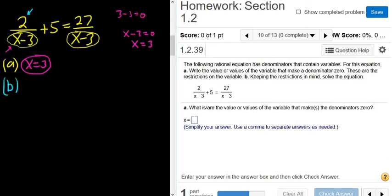Part B wants us to actually solve the equation. So I'll rewrite it: 2 over x minus 3 plus 5 equals 27 over x minus 3.